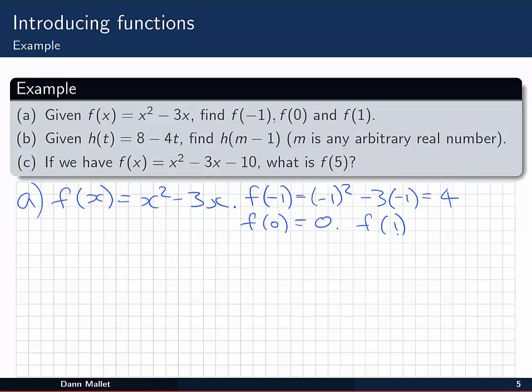And f of 1, put a 1 in there instead of x, we get 1 squared is 1, take away 3 times 1, that's going to be minus 2. So those are some specific values of the function f of x given x values.